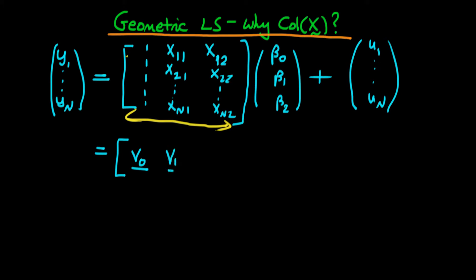The second vector v1 is just the column which is all the observations of our first independent variable. And then the final vector is the vector which is this column here, the vector of the second independent variable observations. And we're still multiplying this through beta 0, beta 1, times beta 2, and then we're adding on our error vector u1 through un.